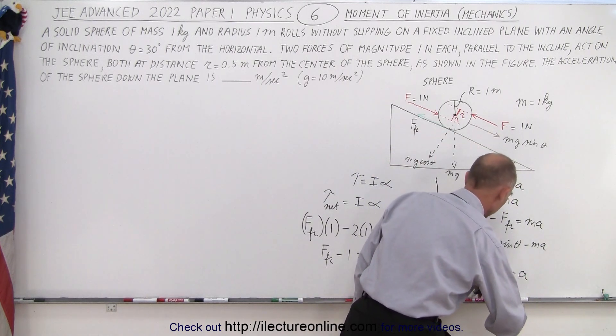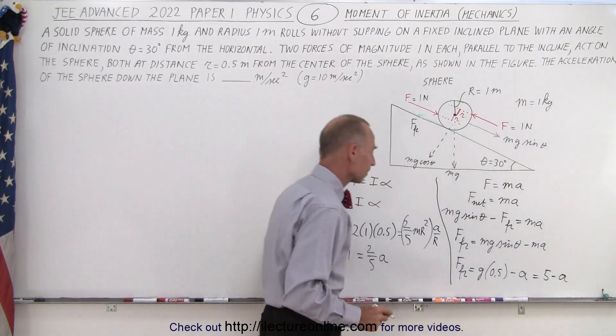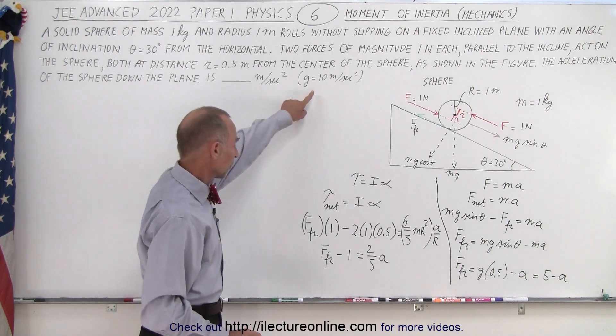Or, simply, G is equal to 10, so this becomes 5 minus A. Because G is equal to 10 meters per second squared.